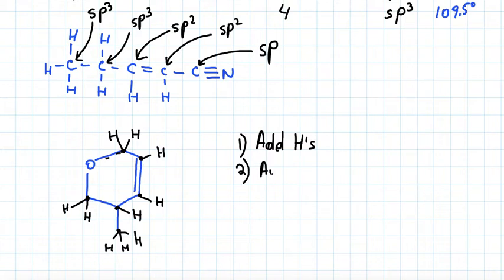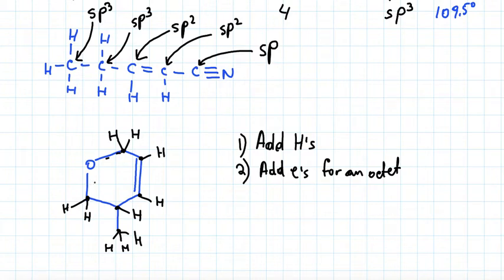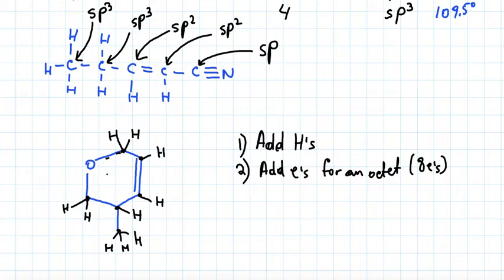The second thing we need to do is add electrons for an octet. Sometimes problems will not show electrons for elements such as oxygen, nitrogen, and sulfur, and we need to add the correct number of electrons to make sure all elements have an octet — eight electrons. The oxygen shown here has two bonds, meaning it already has four electrons, but it wants eight. So we add four more electrons as two lone pairs.